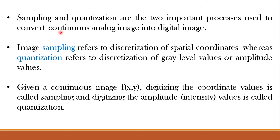Now that we have understood the importance of digitization, let us see what the term actually means. The process of digitization involves two steps: sampling and quantization. In other words, digitization is equal to sampling plus quantization. Sampling and quantization are two important processes used to convert a continuous analog image into a digital image. Image sampling refers to discretization of spatial coordinates, that is along the x-axis and y-axis, whereas quantization refers to discretization of gray level values.